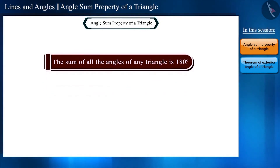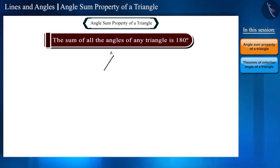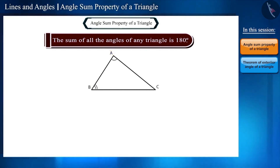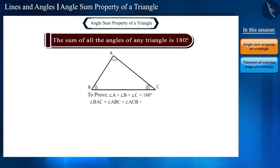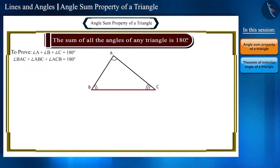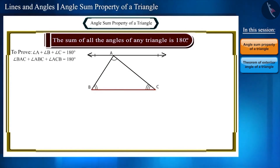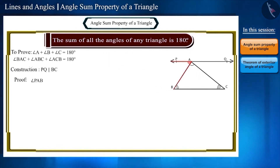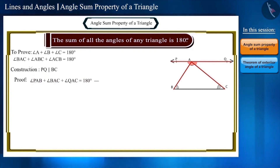Suppose triangle ABC is given with angles A, B, and C. We have to prove angle BAC plus angle ABC plus angle ACB equals 180 degrees. Draw a line PQ parallel to side BC passing through vertex A. The sum of angles PAB plus BAC plus QAC equals 180 degrees since they are on a straight line — call this equation 1.